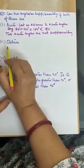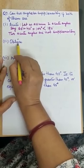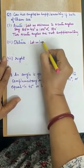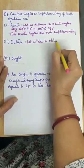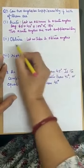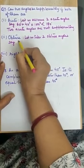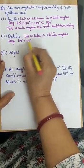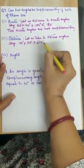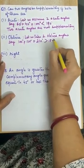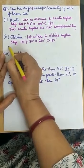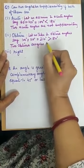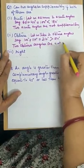The second part: can two obtuse angles be supplementary? Let us take two obtuse angles, say 100 degrees and 110 degrees, and find their sum. It comes to 210 degrees, which is more than 180 degrees. So again, two obtuse angles are not supplementary.